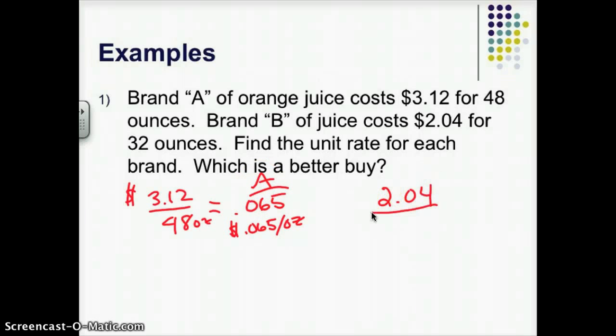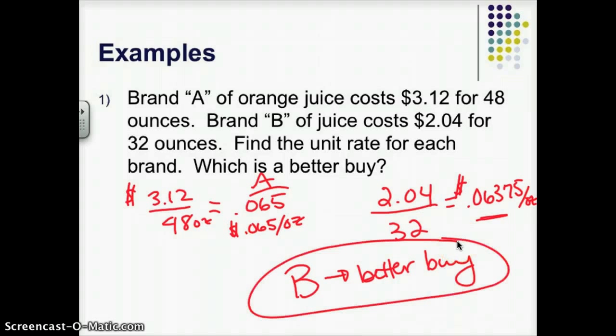I probably use a calculator for that division. And I get 0.06375. So this is going to be 0.06375 dollars per ounce. Okay, these look very close. They're both a little bit more than 6 cents per ounce. But Brand B is a little bit cheaper. You can see 0.06375 is a little bit less than 0.065. So Brand B is a better buy. You can solve this other ways, but unit rate is just the way we're going to be focusing on right now.